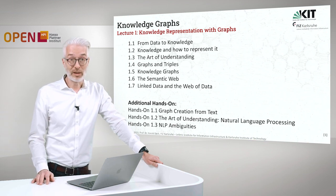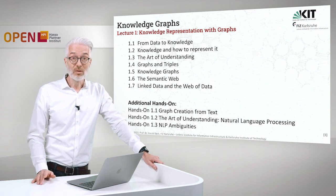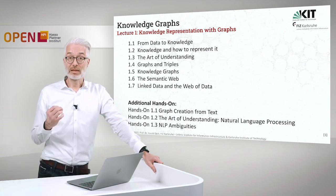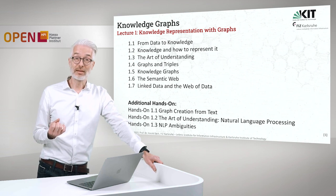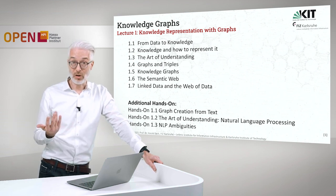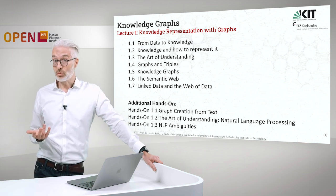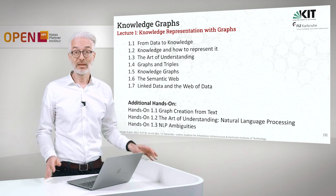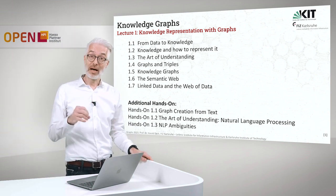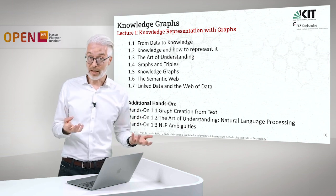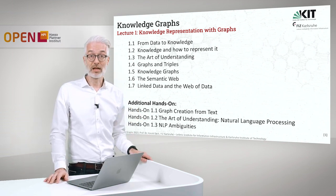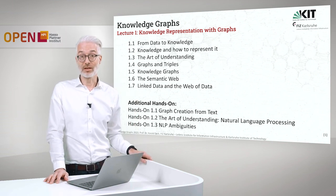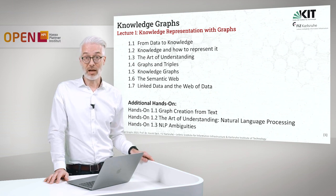Let's start with week number one: knowledge representation with graphs. First of all, we have to make clear what is knowledge and how does it differ from data. Pure data is raw — it doesn't have any meaning. We have to put context, information and everything together to come up with knowledge. This is the subject of our first part of the lecture: from data to knowledge. Knowledge representation is one of the important issues we are after.